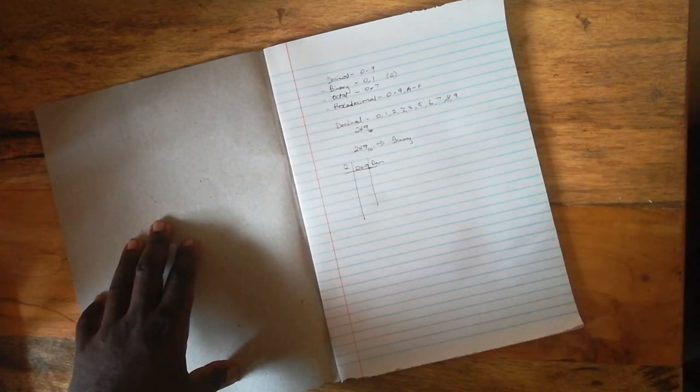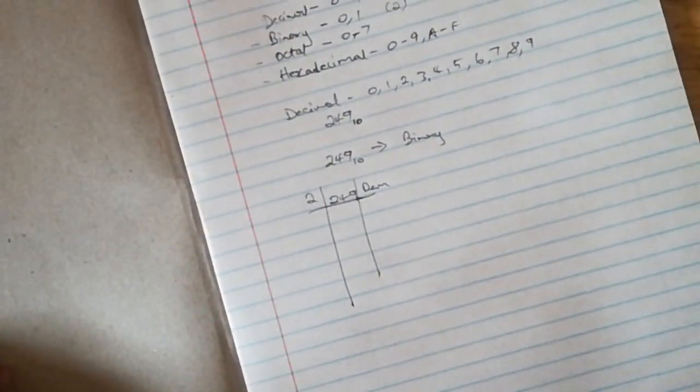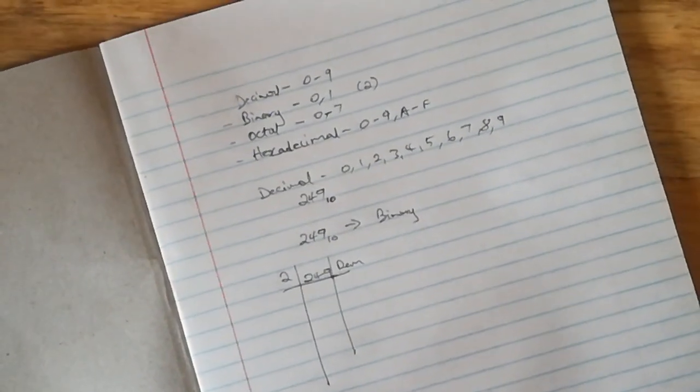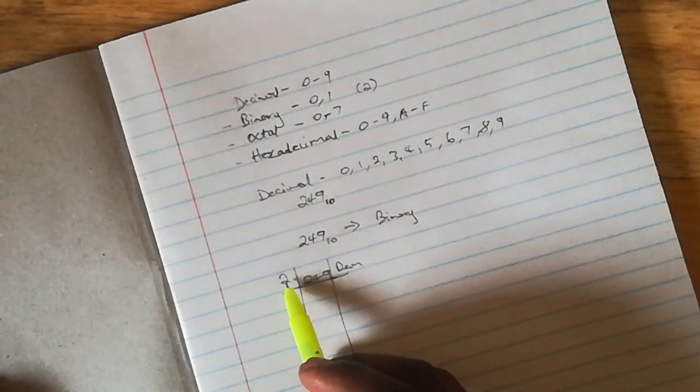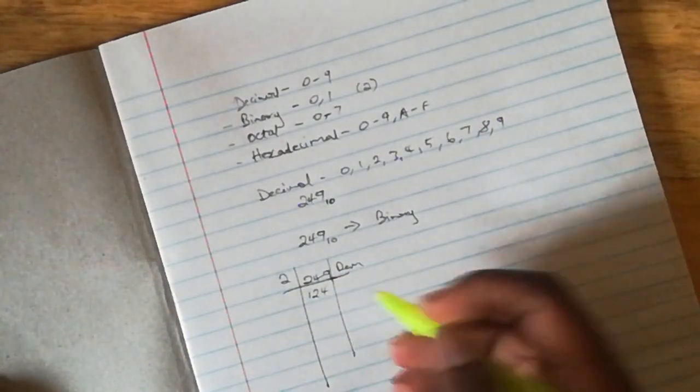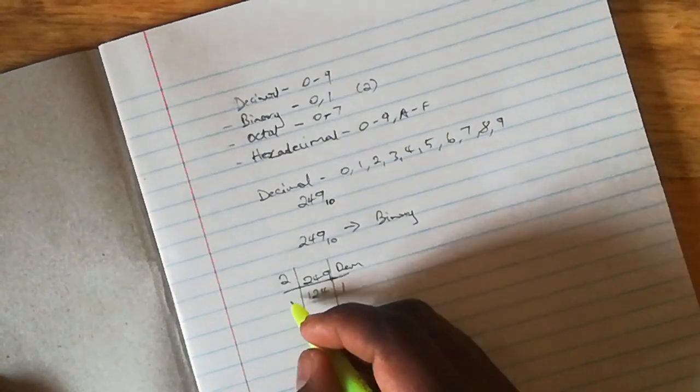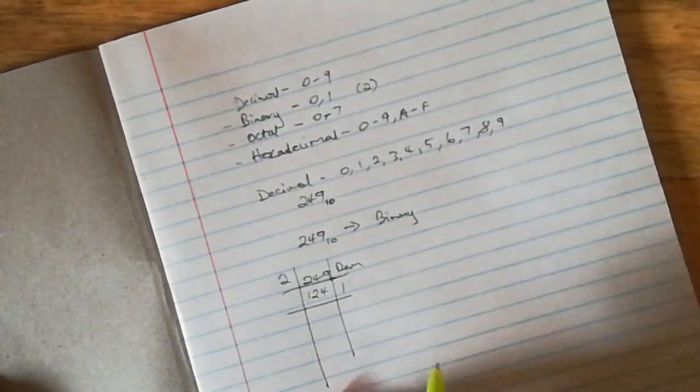The procedure will involve division. The binary number system has two digits, therefore the base is two. We will be dividing 249 by two and noting the quotients and remainders. When you do this long division, you'll end up with a binary equivalent of your decimal number. Dividing 2 into 249, you get 124 with a remainder of 1. We repeat the divisions until our quotient is 0.